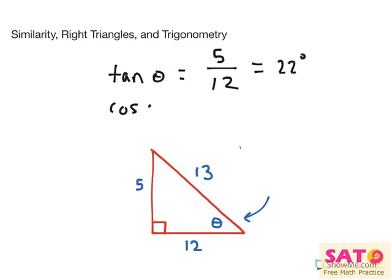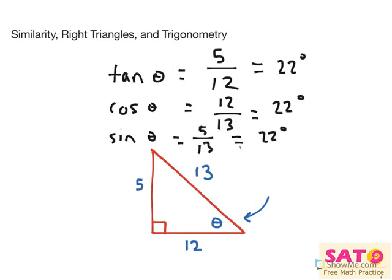And we can solve for, let's say cosine, which would be adjacent over hypotenuse, which would be the same result. And for the last one, sine theta equals 5 over 13, and same result. They would all equal the same thing, but there's just different ways of getting the same result.